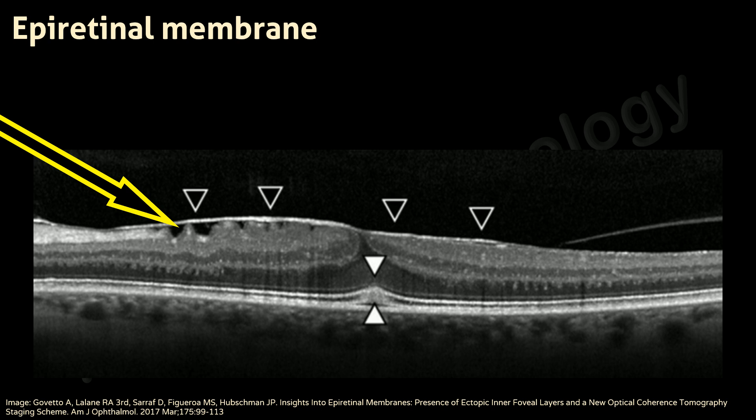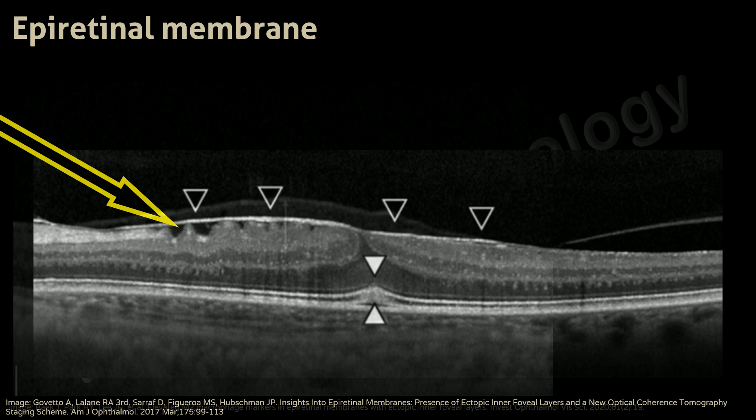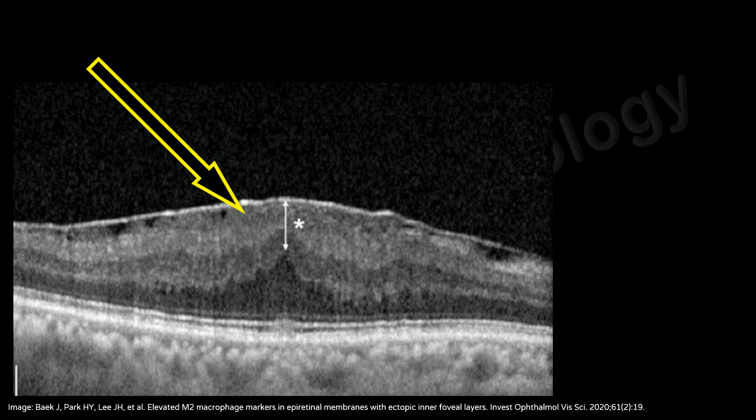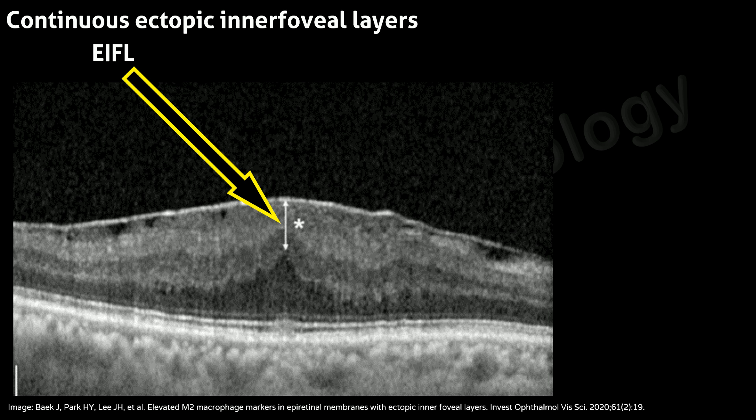Prominent retinal distortion produced by an epiretinal membrane is referred to as macular pucker. Here you can see an epiretinal membrane with a continuous band of the inner retinal layers across the foveal region. This is termed as continuous ectopic inner foveal layers, or IFIL, and based on this, Goveto and colleagues have developed an OCT-based classification of idiopathic epiretinal membranes.